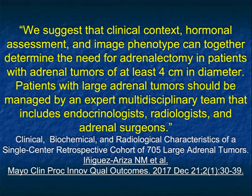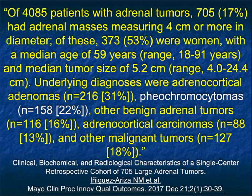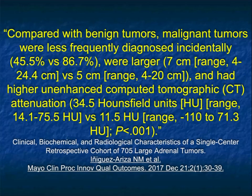Patients with large adrenal tumors should be managed by an expert multidisciplinary team including endocrinologists, radiologists, and adrenal surgeons - and that's what is done at Hopkins. Of 4,085 patients with adrenal tumors, 17% were over 4 cm. Adrenal cortical adenomas, pheochromocytomas, other benign adrenal tumors, as well as carcinomas and malignancies, were all part of the spectrum of lesions, so pheo fits into this group as well.